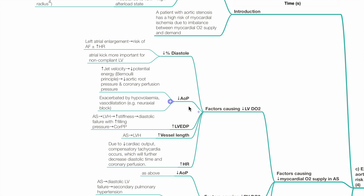Reduced aortic pressure: increased jet velocity leads to reduced potential energy based on Bernoulli's principle. This leads to reduced aortic root pressure and coronary perfusion pressure. This is exacerbated by hypovolemia and vessel dilation, for example due to neuraxial block.